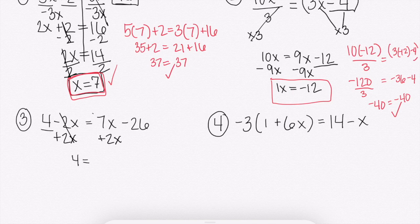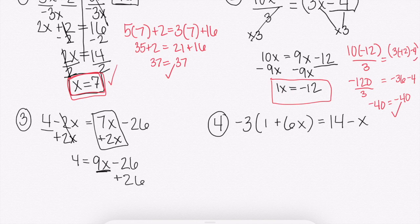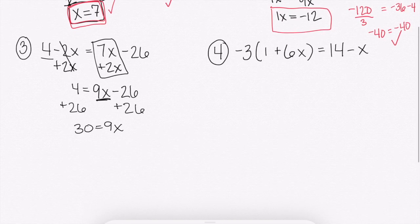Those would cancel, and we're just left with that 4. And then remember, we can only combine like terms here. We cannot combine that with that minus 26. So we have 9x minus 26. And then we want our x's on one side and numbers on the other. So to get my x's by themself, we'd want to get rid of minus 26 by adding 26. So that I get 30 equals 9x. And then this is just a one-step equation. You're going to solve for x by dividing by 9 because 9 divided by 9 would get you 1x.